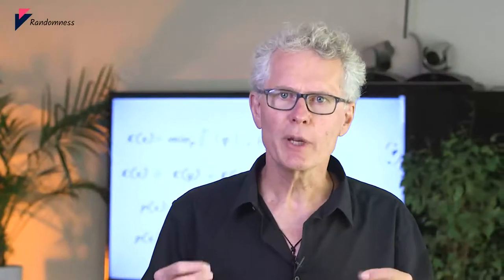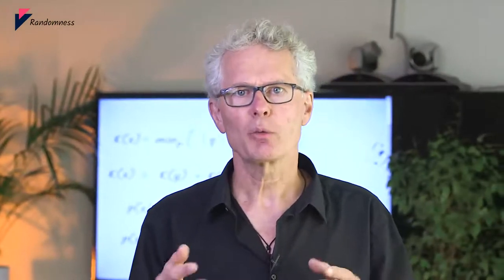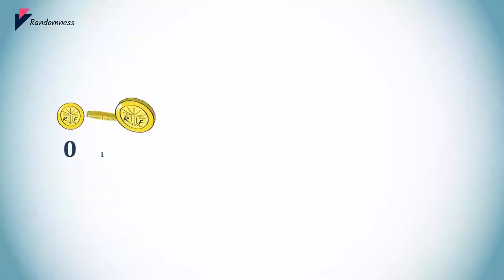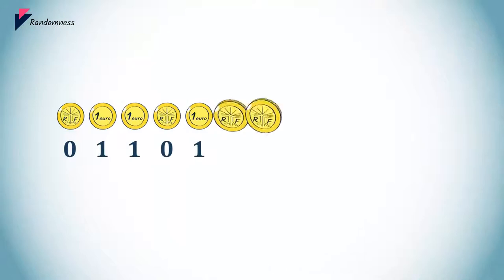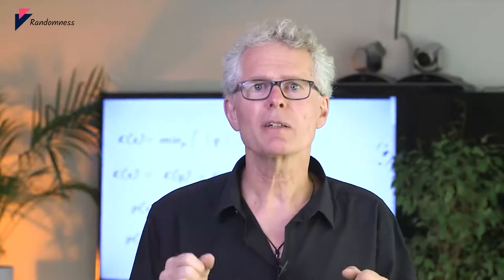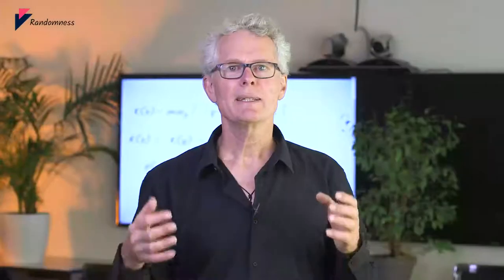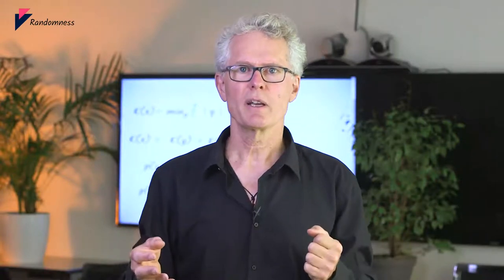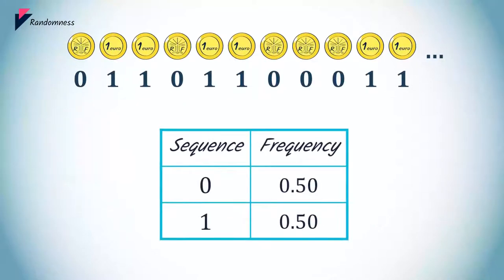We all have an intuitive idea about what randomness means. If we flip a coin repeatedly, we get a random sequence of heads and tails, which translates into a random binary series. But can we provide a mathematical characterization of randomness? Is it related to the notion of probability? Intuitively, a random binary sequence should be fully balanced — 50% zeros and 50% ones.